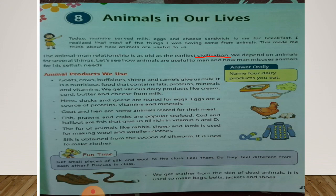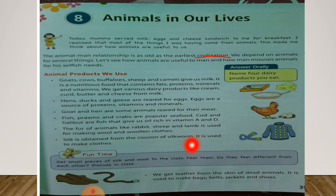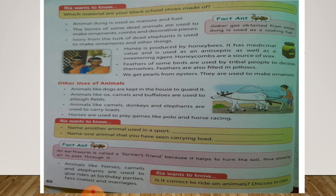See the last point of animal products we use. We get leather from the skin of dead animals. It is used to make bags, belts, jackets, and shoes. Now Riya wants to know: which material are your black school shoes made of?